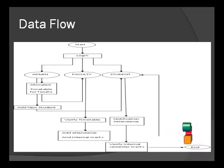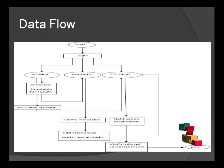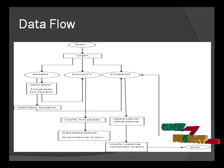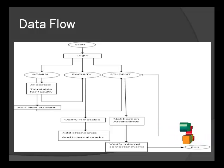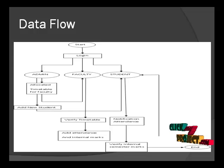Let's see the data flow diagram of this project. There are three processes: admin process, faculty process, and student process. In the admin process, the administrator is responsible for entering new students. The administrator will allocate the timetable for each faculty, manage faculty accounts such as entering new faculty, and assign faculty to subjects. The administrator will also check all updates — student updates, faculty updates, and exam updates.